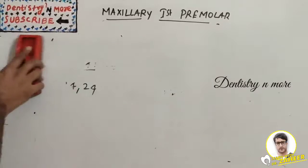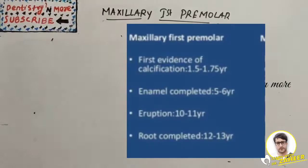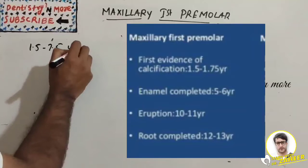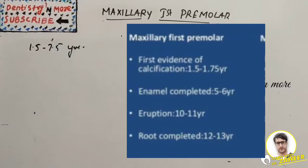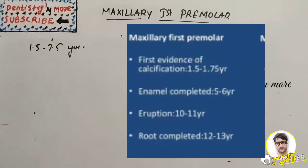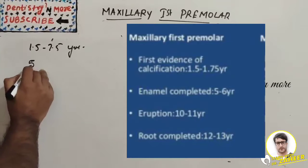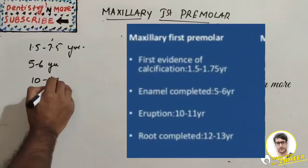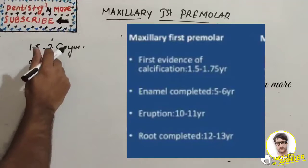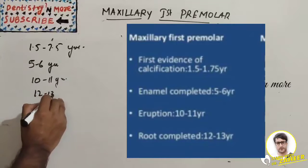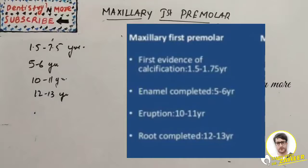Regarding chronology: the first evidence of calcification is at 1.5 to 1.75 years — note that for canines it was in months, and central and lateral incisors were also in months. Enamel completion is at 5 to 6 years. Eruption is very late at 10 to 11 years compared to enamel completion, and root completion is at 12 to 13 years.